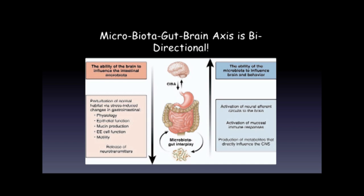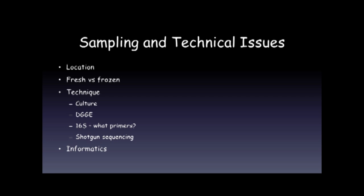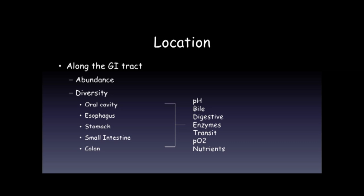Sampling is a major issue. For obvious reasons, most studies are performed using fecal samples, particularly when looking at thousands of people. But there are important considerations: what location in the gut are you sampling? Are you studying fresh or frozen stool? What technique are you using? And even within techniques, there are many implications of precisely how you perform them. When we talk about locations along the GI tract, the abundance and diversity of bacteria varies tremendously — as we move from the oral cavity to the colon, not only do numbers increase but diversity increases, related to luminal environment, pH, presence of bile and digestive enzymes, transit rate, PO2, and available nutrients.